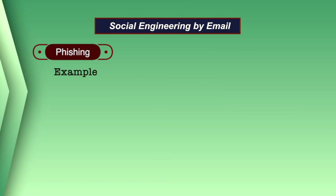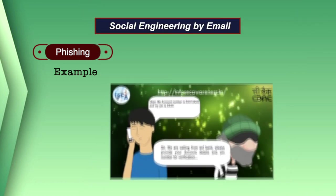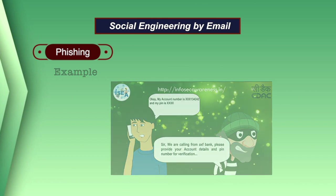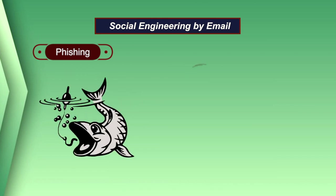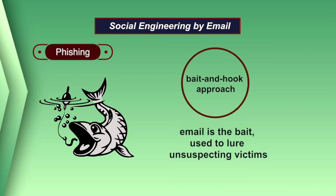Some examples are an email looking like it's from your bank asking you to verify details, or a phone call pretending to be from a company that you trust, requesting you to divulge confidential information like a PIN number. Phishing attacks are essentially a bait and hook approach wherein the email is bait used to lure unsuspecting victims before hooking information from them.